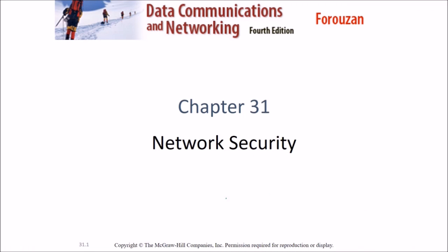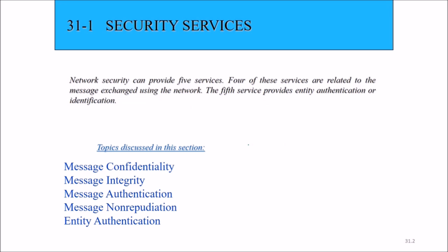In data communications and networking, we are talking about network security. If we have Bob and Alice and they want to communicate, sending or receiving some data, this data is passing through various channels, various wires — maybe they are far apart in two different countries. So this data or content is passing through various mediums, and we have various networks in between.